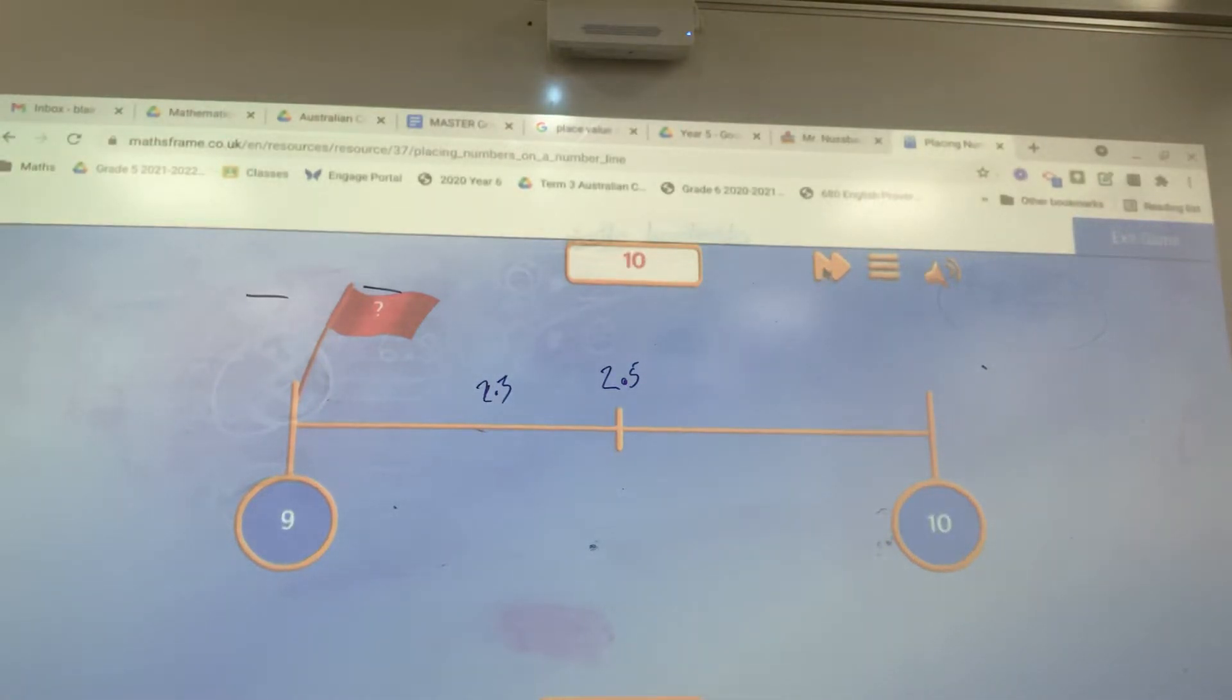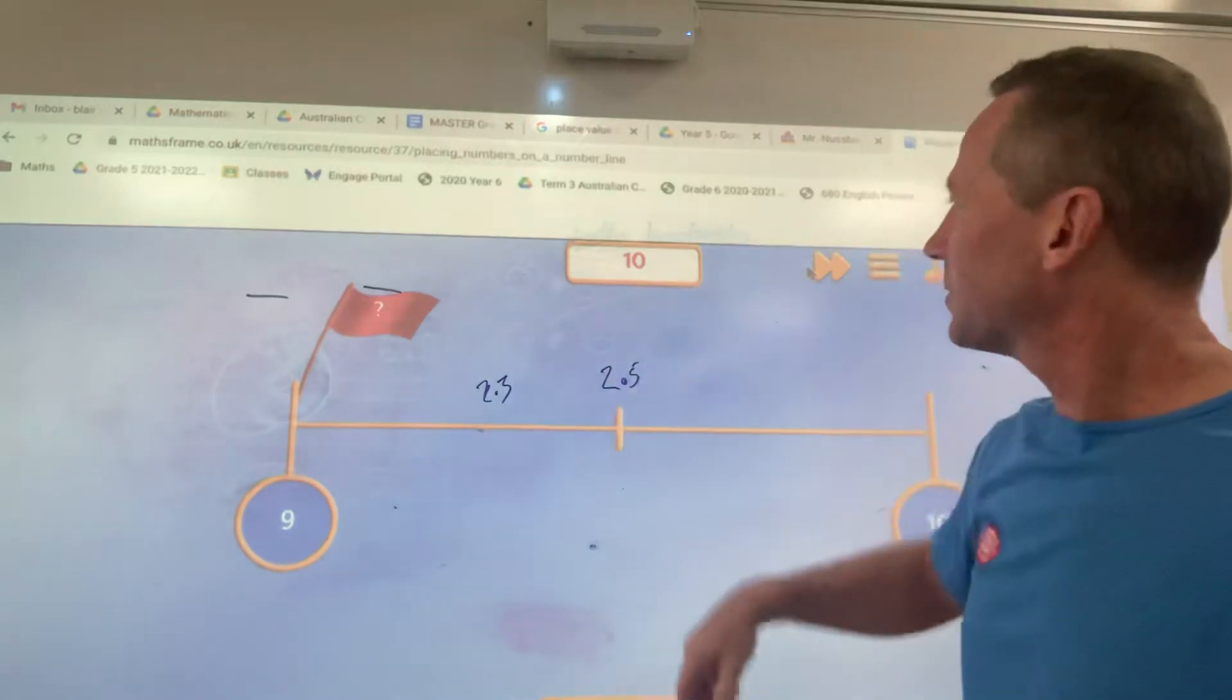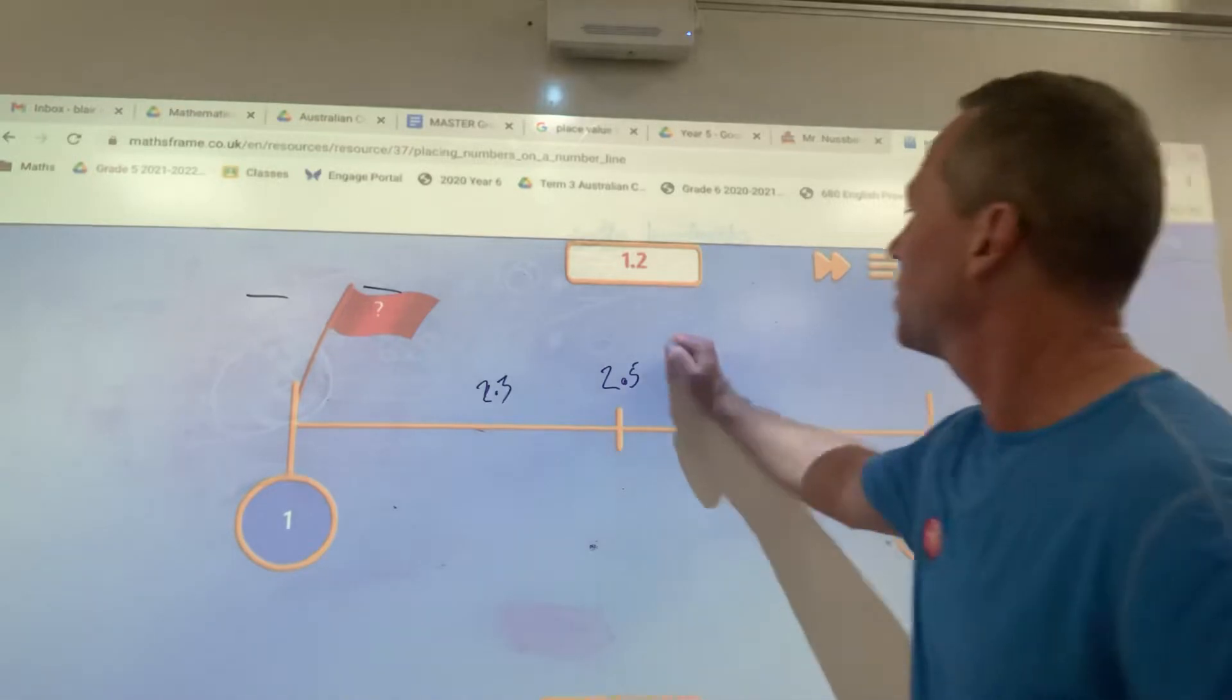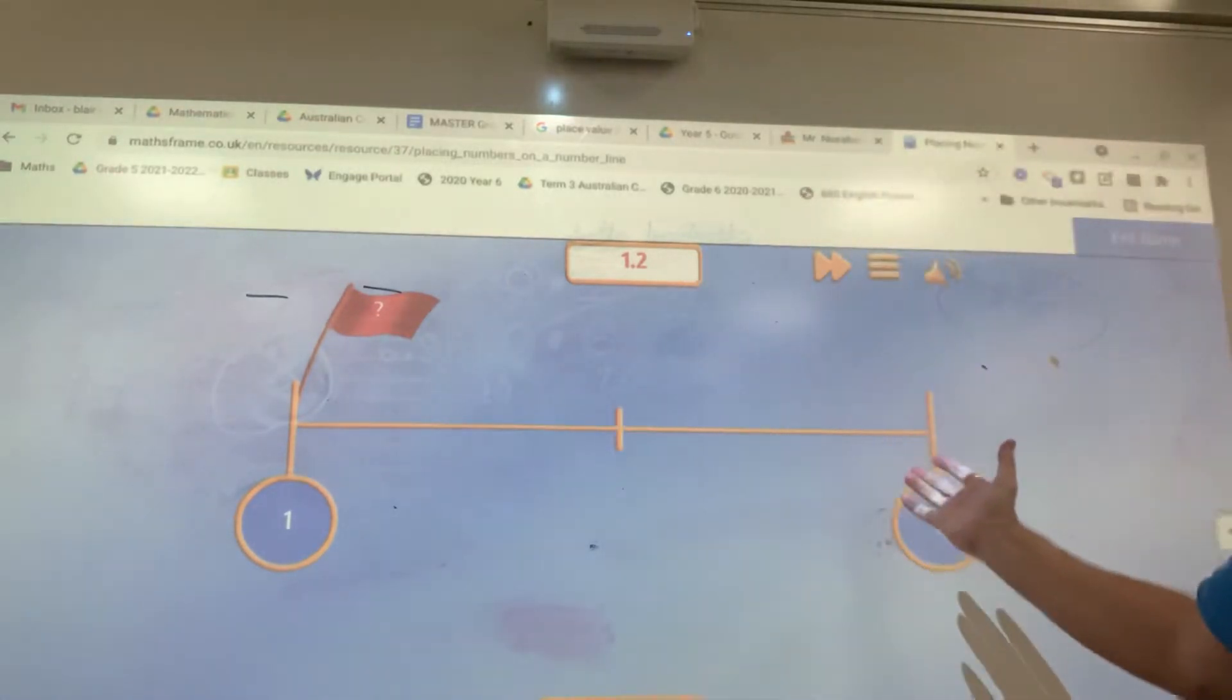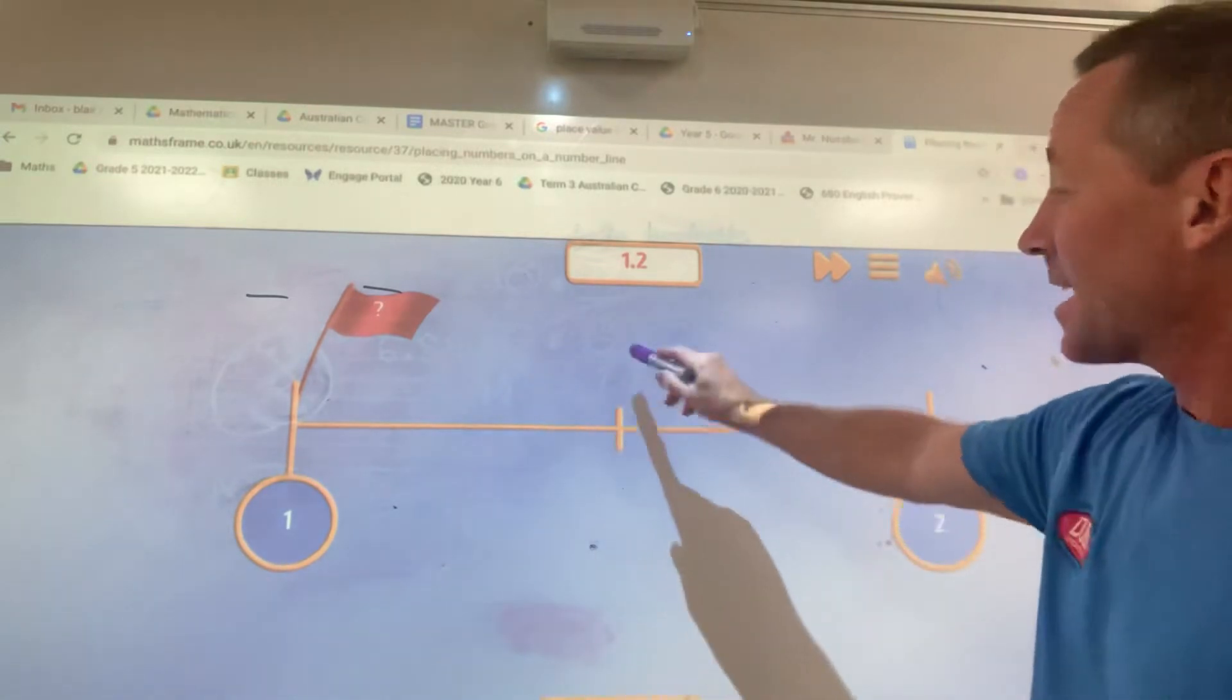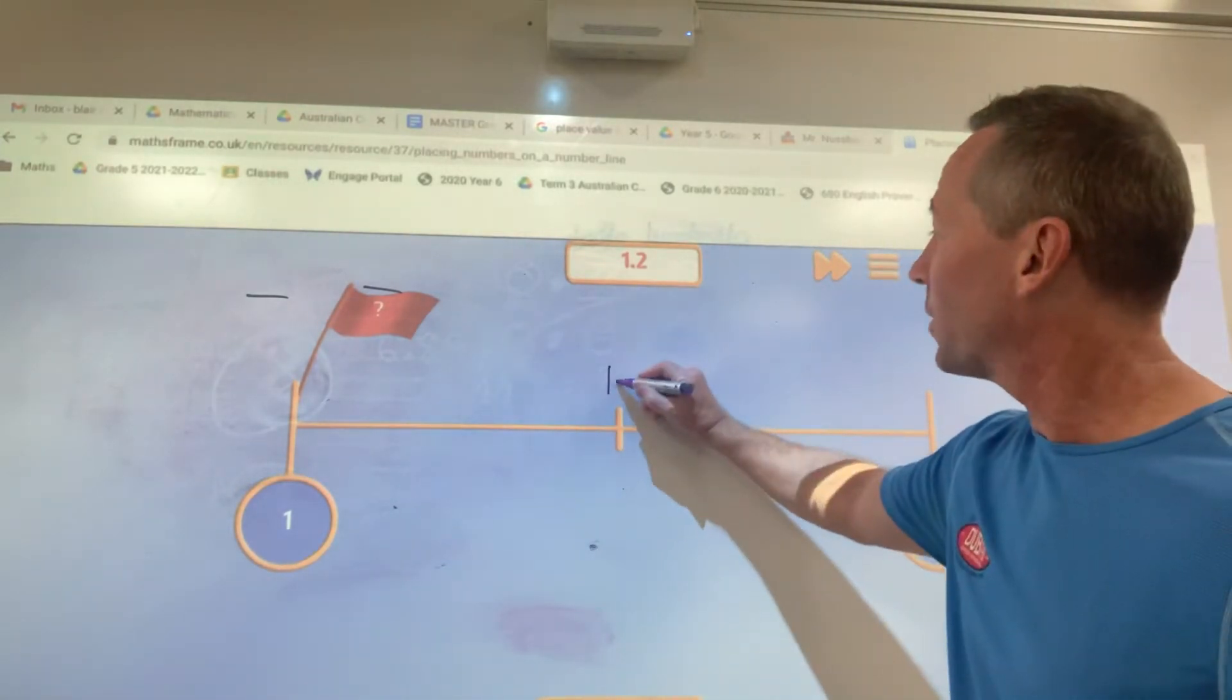Between 9 and 10. Okay, a little bit tricky, these ones. Here we go, 1.2. Where would I place 1.2 on here? We're talking tenths. So again, if that's halfway, that would be 1.5.